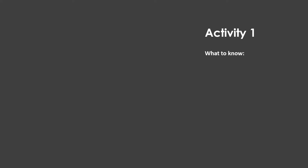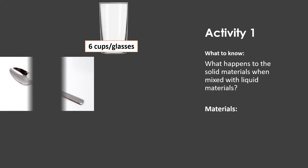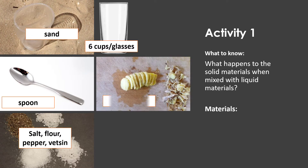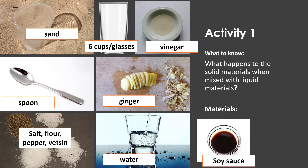Now let's have Activity One — 'What to Know.' What happens to solid materials when mixed with liquid materials? The materials we need are: six cups or glasses, a spoon, salt, flour, pepper, vetsin, sand, ginger, water, vinegar, and soy sauce.